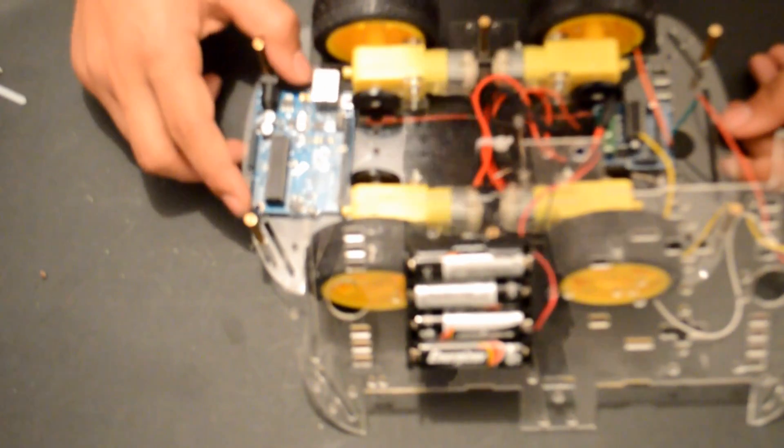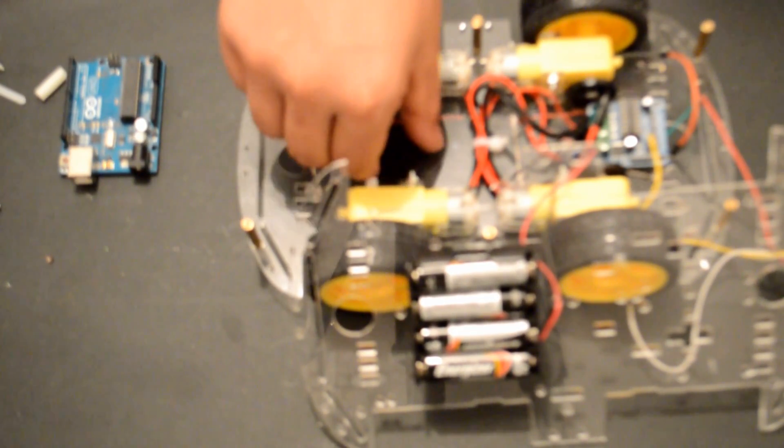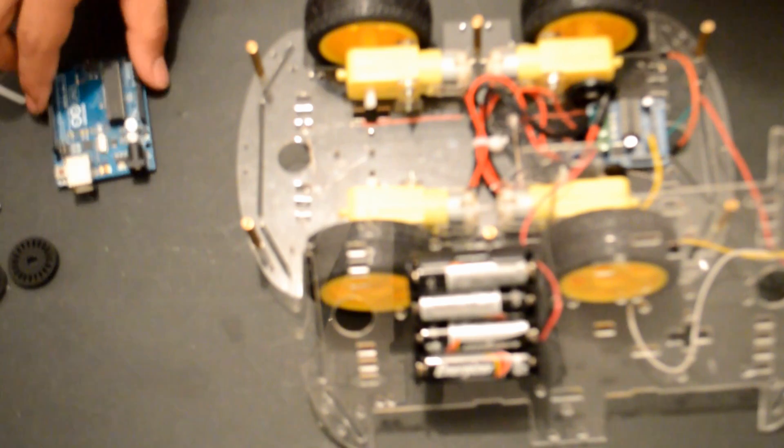So now it's time to mount the Arduino. I will be mounting it in the back here. Since I'm not using these speed decoders, I will remove them for now to add more room for my Arduino. And I will be using this spacer to mount the Arduino in place.